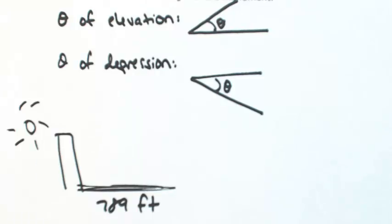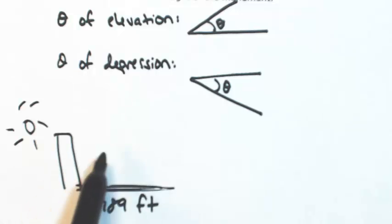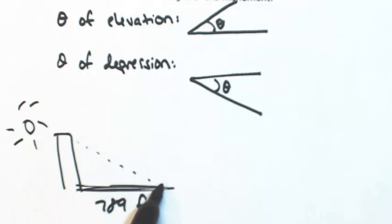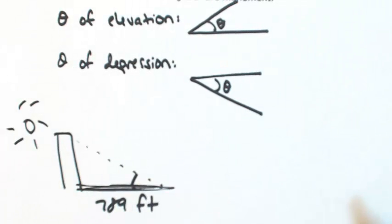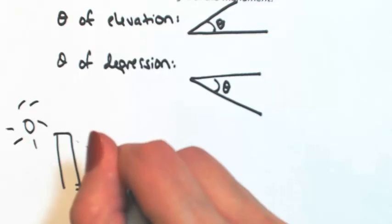Okay, the angle of elevation of the sun. So we have two possible choices here. The sun is shining, so it's either the top one or the bottom one. Since we're talking about elevation, it's going to be the bottom one because it's going up. So the angle of elevation is 35.1 degrees.